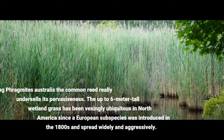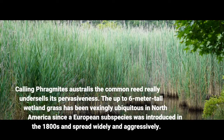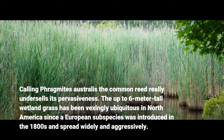Calling Phragmites australis the 'common reed' really undersells its pervasiveness. The up-to-6-meter-tall wetland grass has been vexingly ubiquitous in North America since a European subspecies was introduced in the 1800s and spread widely and aggressively.